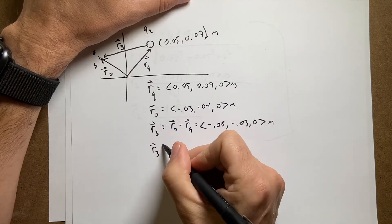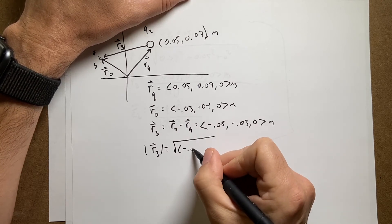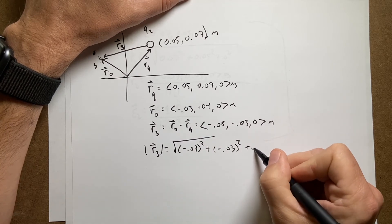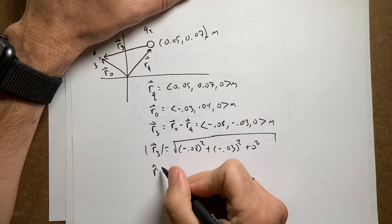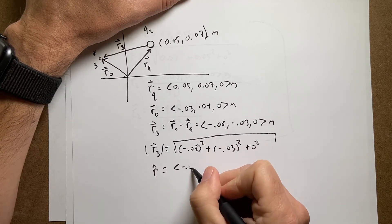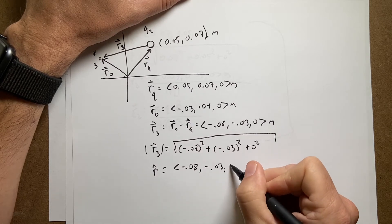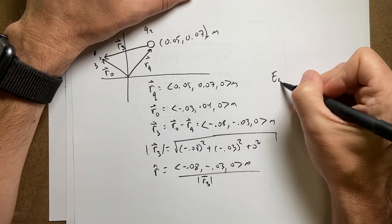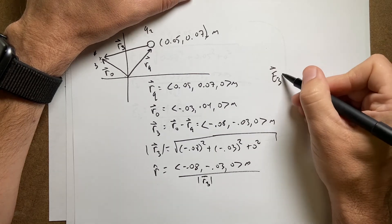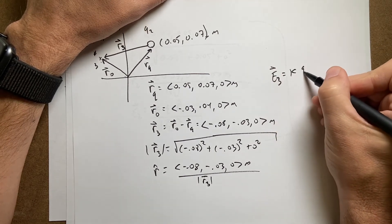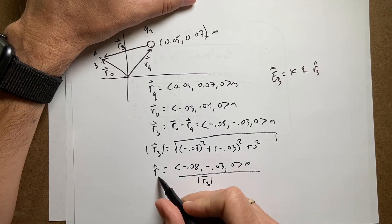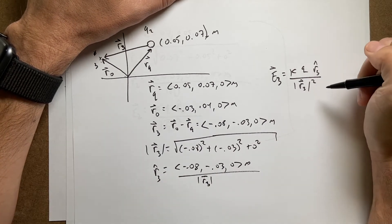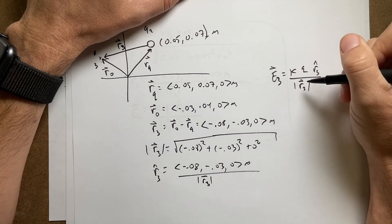Now I can do the problem just like before. The magnitude of r3 is the square root of negative 0.08 squared plus negative 0.03 squared plus 0 squared. r3 hat is (negative 0.08, negative 0.03, 0) meters divided by the magnitude of r3. And finally e3 is k times q times r3 hat over the magnitude of r3 squared. I'm going to put this in Python right now to show you how vector operations work.